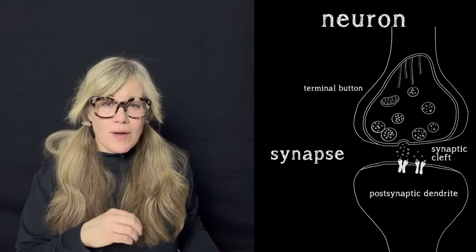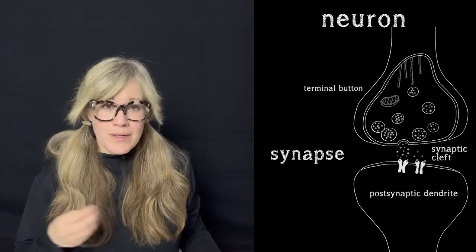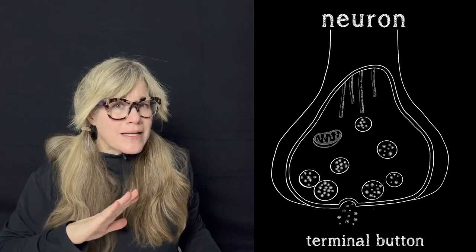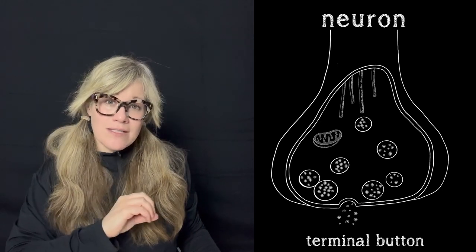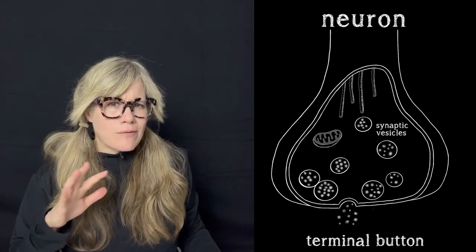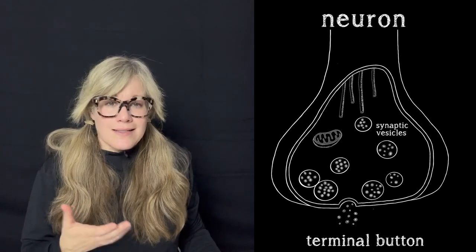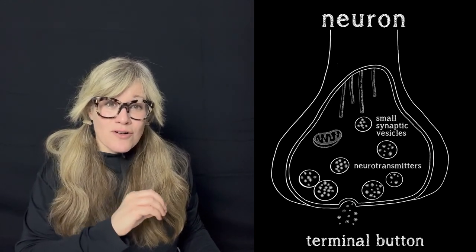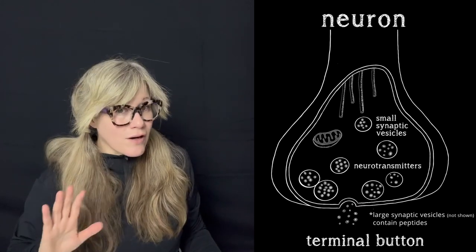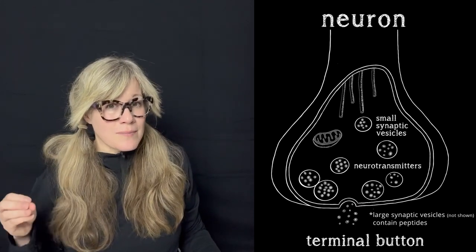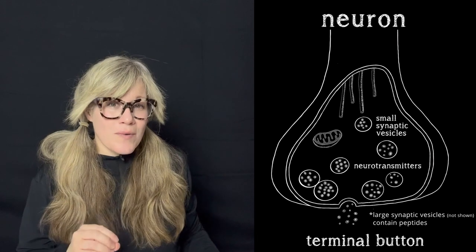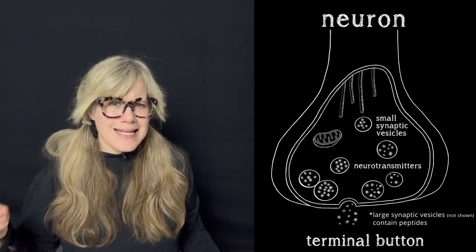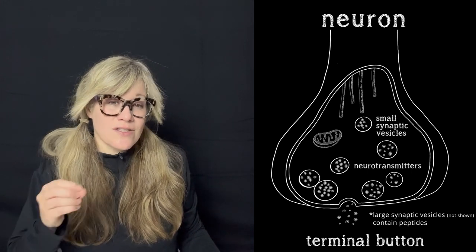You might be wondering what material needs to be transported up and down the axon between the soma and the terminal button. Well, the terminal button contains large and small vesicles called synaptic vesicles, which are like round membranous sacks that look like escape pods. The small synaptic vesicles contain neurotransmitters; the large synaptic vesicles contain different types of peptides. The soma produces these large and small vesicle sacks and the peptides, and it makes the enzymes needed to synthesize neurotransmitters.